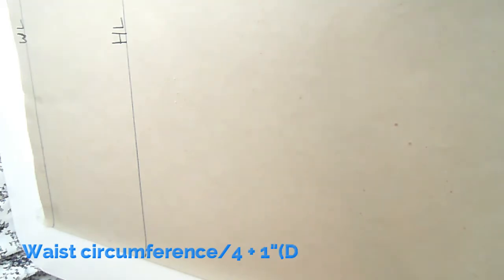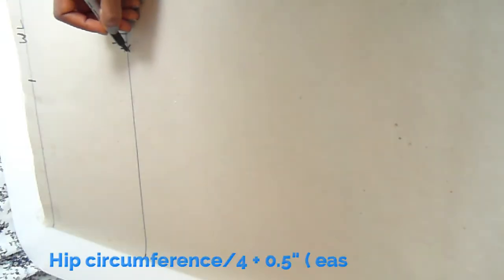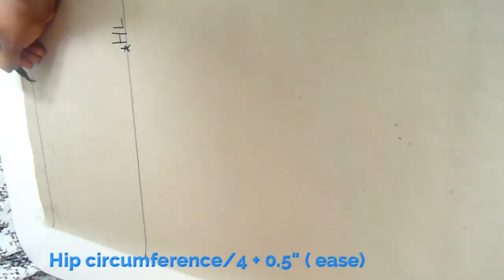Now I label each of the lines. Starting from the top, the waistline is labeled WL and the hips line is labeled HL. I'll now put in the waist circumference: my waist is 35. 35 divided by 4 is 8.75, plus 1 inch ease, gives 9.75 — I mark that point. Then for the hips, divide by 4 plus ease, and mark the hips measurement.